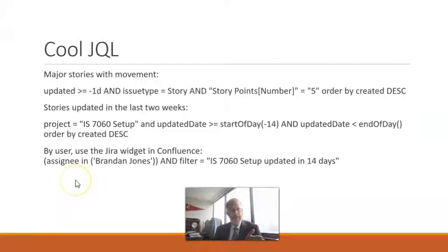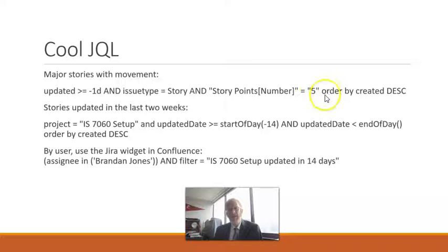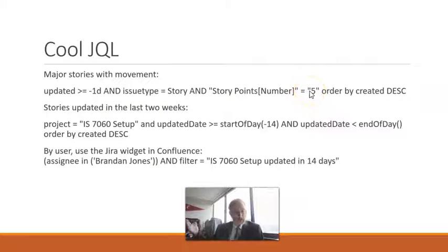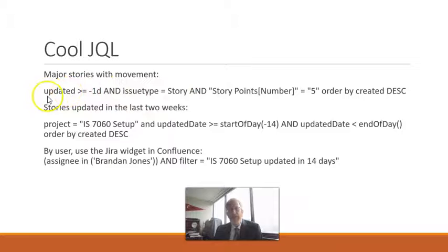I have some of my favorite JQL nuggets here. Notice: updated minus 1d, and issue type is story, and story point number equals 5, order by created descending. That says: what's a major story? A major story being story points 5, or we could even do greater than or equal to 5. And it has had movement recently — updated within minus 1 day.